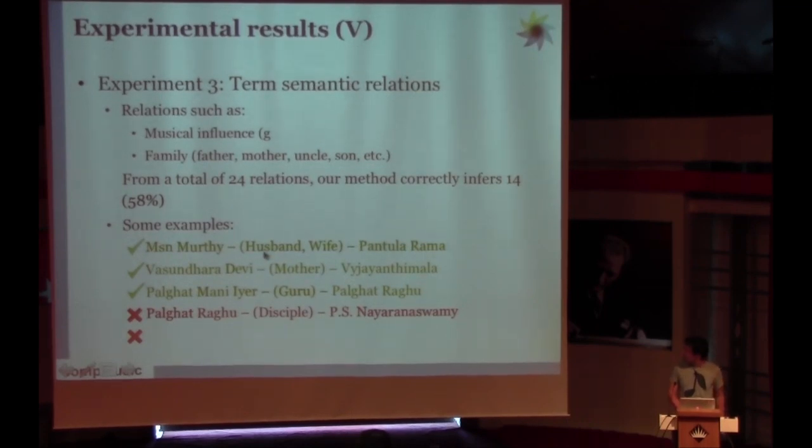For example, those were correct relations that we could find between two different performers or composers. And the wrong ones was that, for example, in Palghat Raghu example, I will just read a sentence. Abhishek is grandson of Palghat Raghu and disciple of P. S. Narayanaswamy. So the system got wrong of assigning the word disciple from Palghat Raghu to Narayanaswamy.